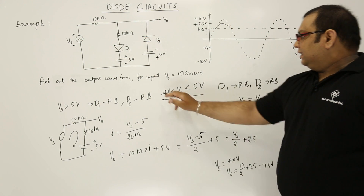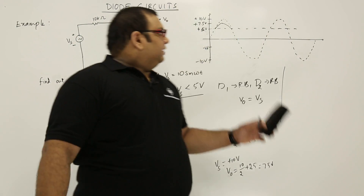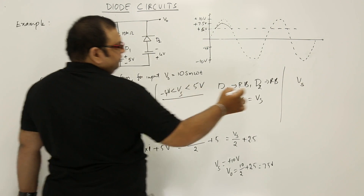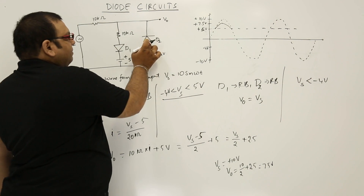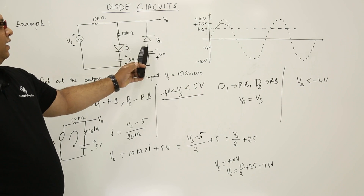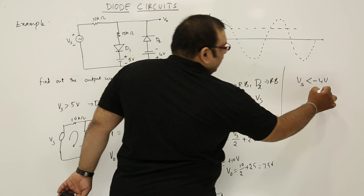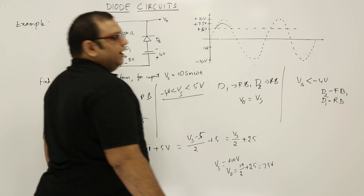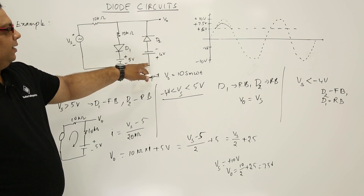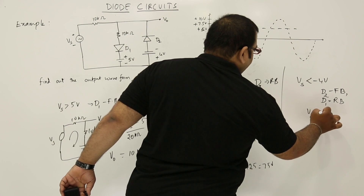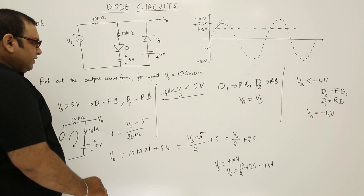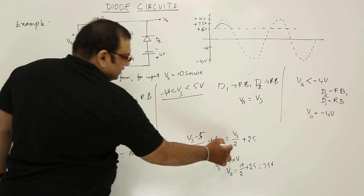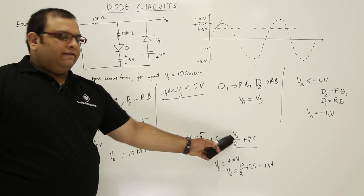The third case is when diode D2 gets forward biased. When Vs is less than -4V, the negative terminal of D2 is less than -4V, so D2 gets forward biased while D1 remains in reverse bias. When D2 is forward biased, V0 is clamped to -4 volts. Summarizing: in the first case when Vs > 5V, the output equation is V0 = Vs/2 + 2.5.